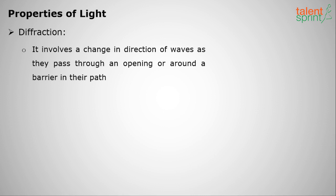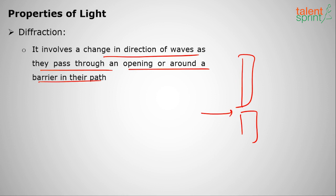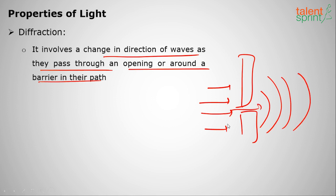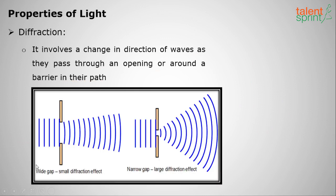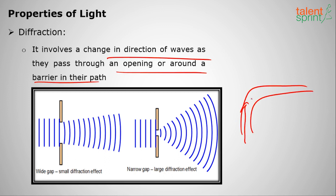Diffraction involves a change in direction of waves as they pass through an opening or around a barrier. When there is a small gap, there is a large diffraction effect; when there is a wide gap, there is less diffraction. For example, light passing through a bend in a pipe will undergo diffraction because of the change in direction.